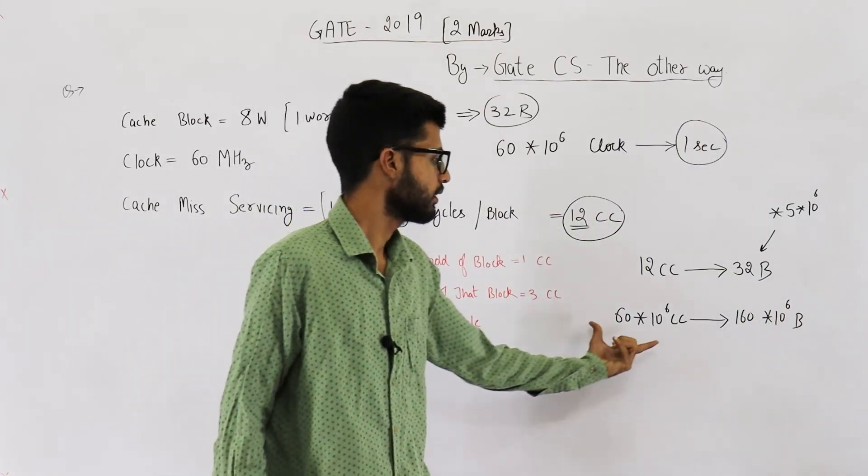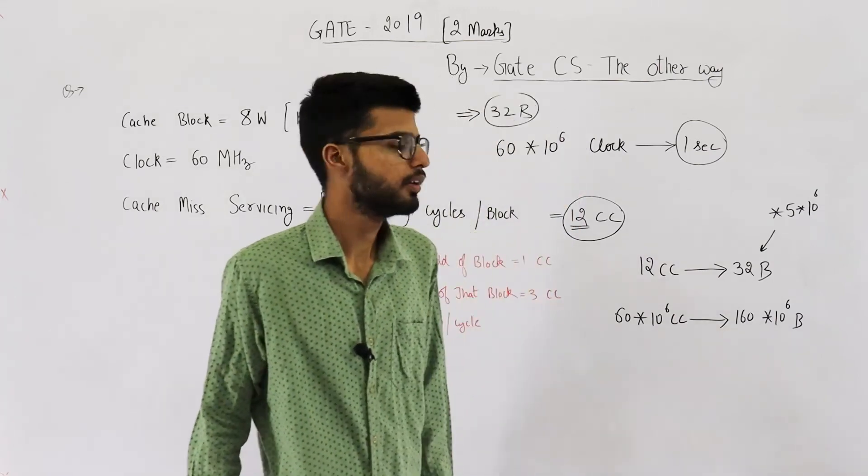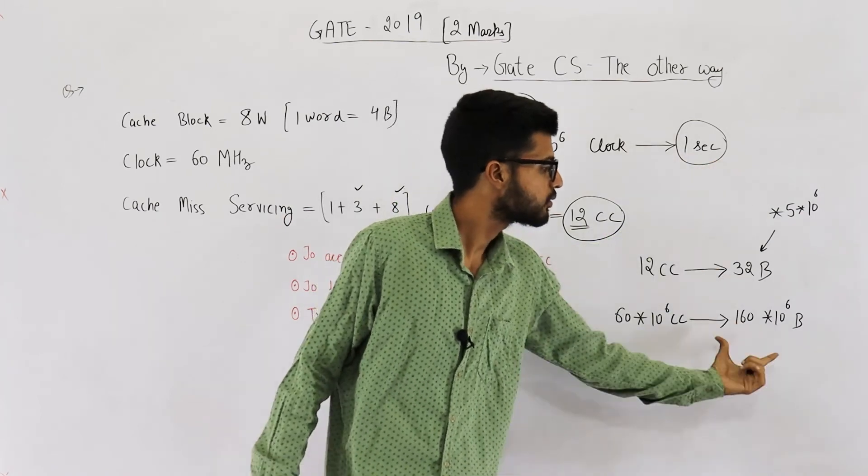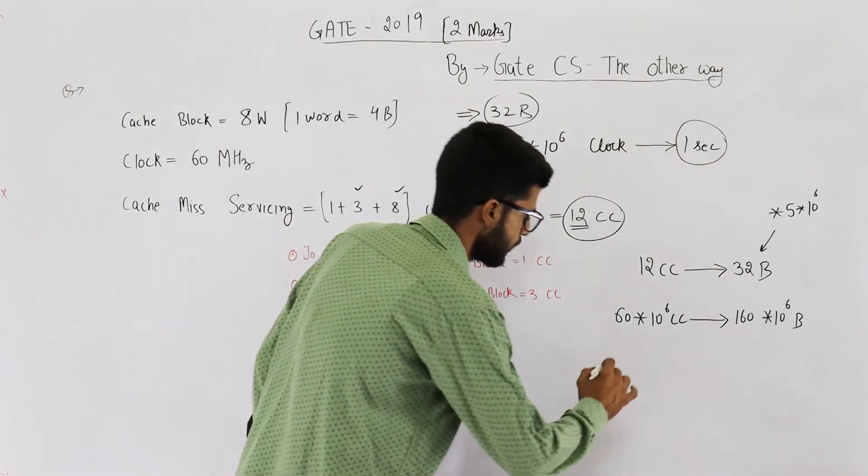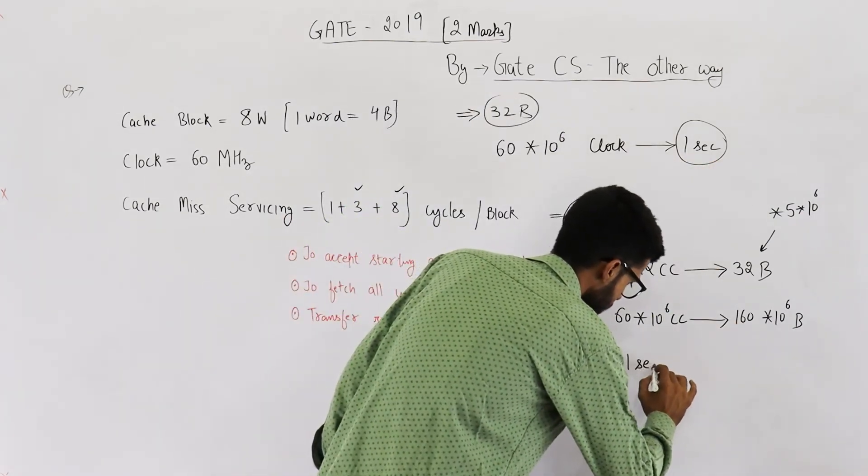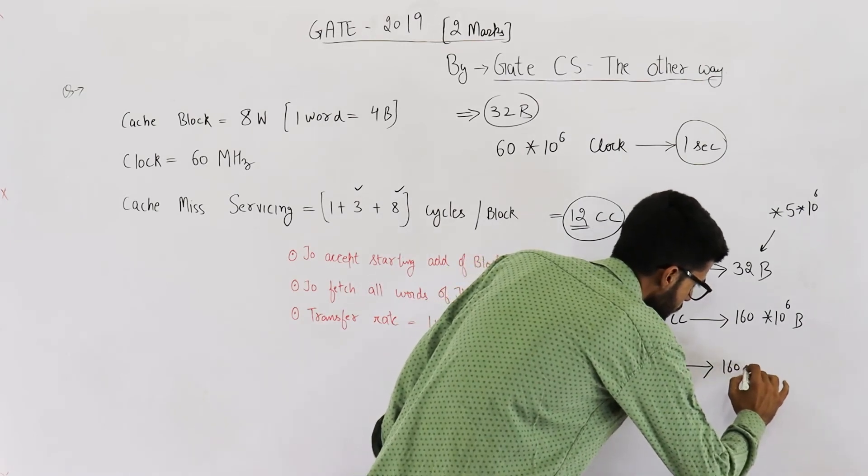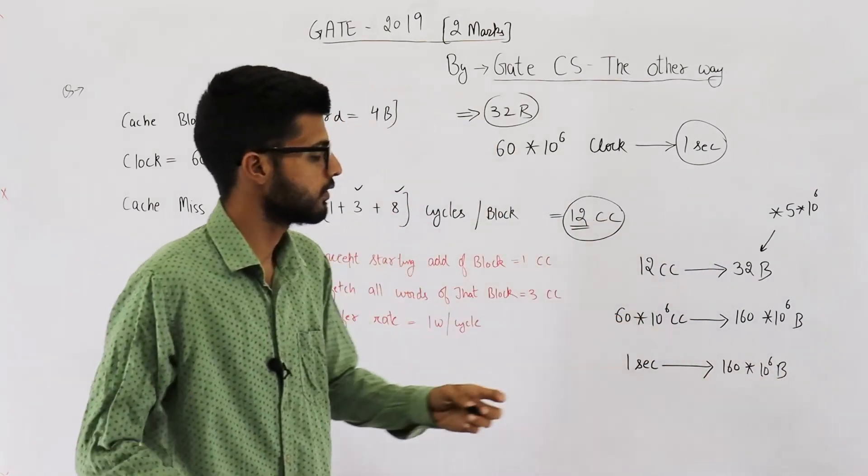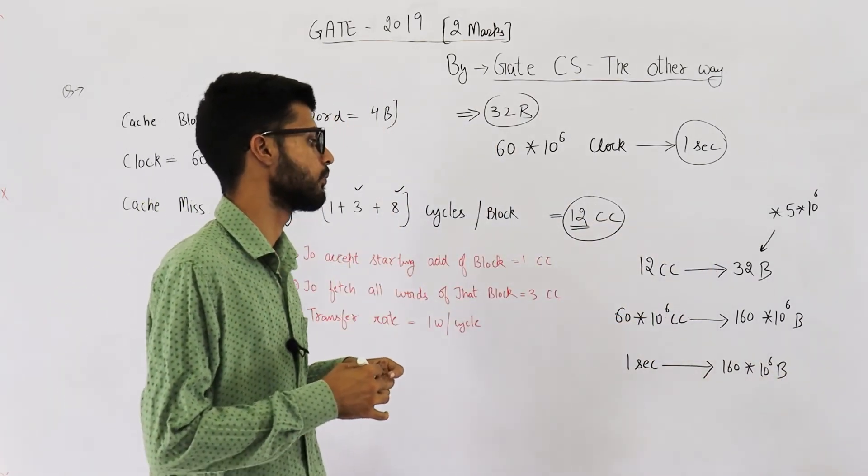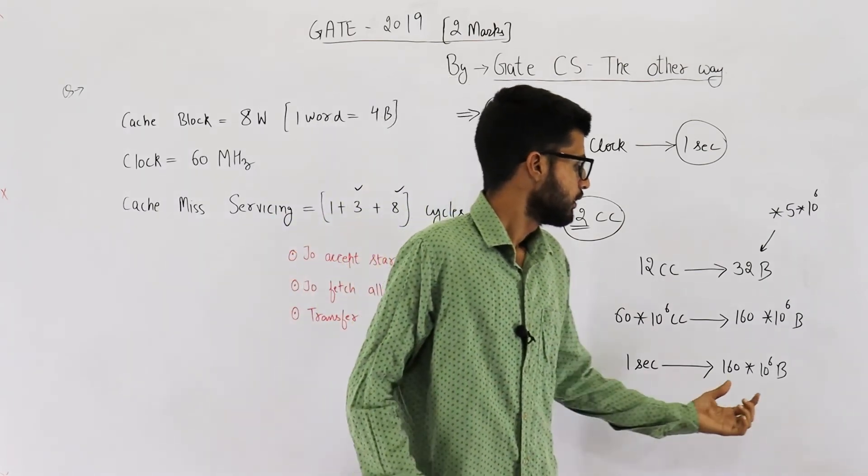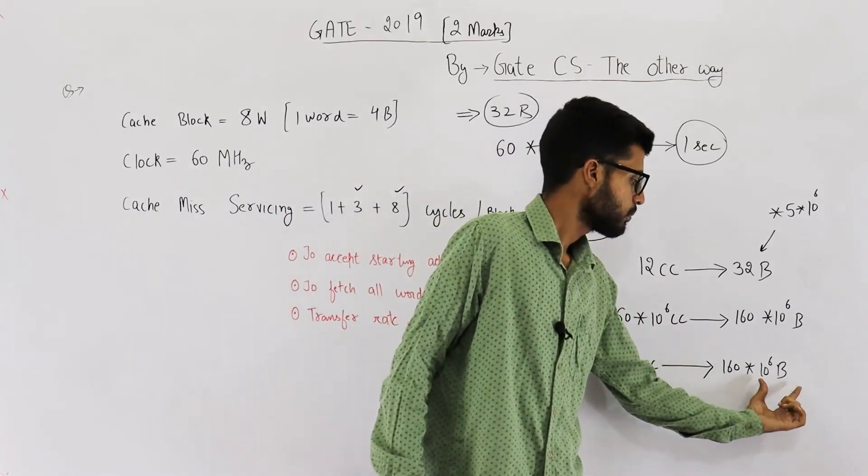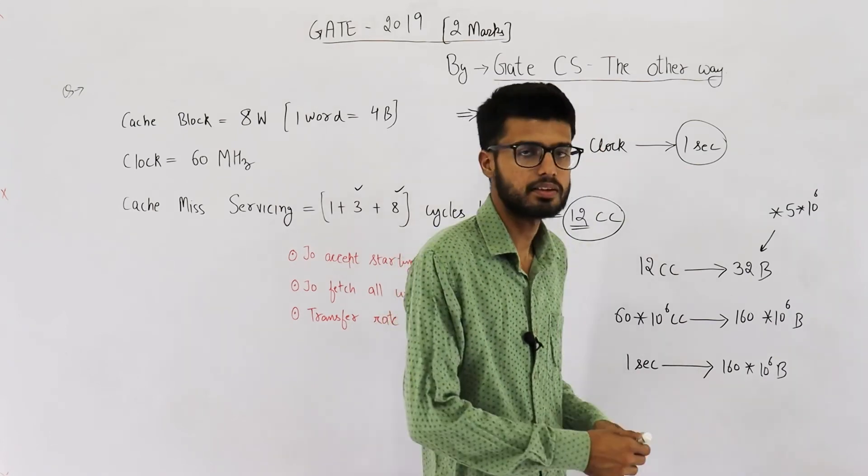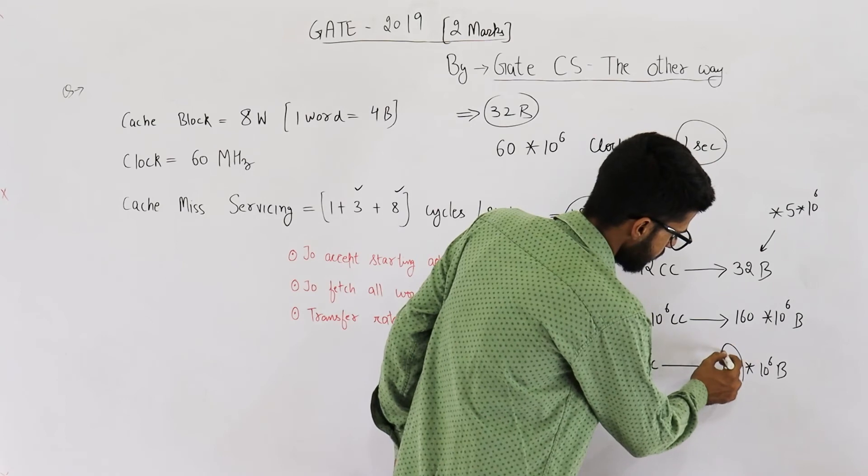So, we found out in these many clock cycles, this much data can be transferred. Also, these many clock cycles require 1 second. So, can I say in 1 second, this much data can be transferred? In 1 second, you could transfer those many bytes of data. That's what they are asking. Dash into 10 raised to the power 6 bytes per second can be transferred. So, dash is 160. This is your answer.